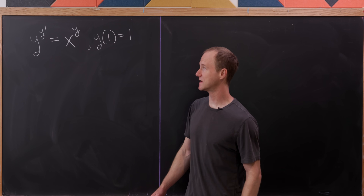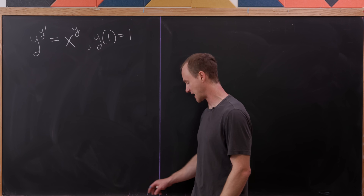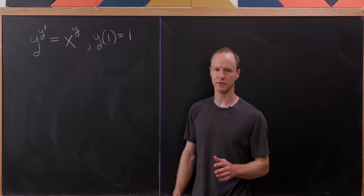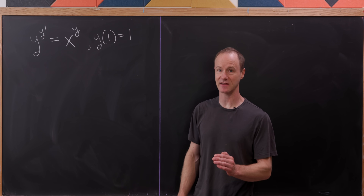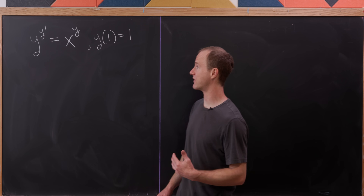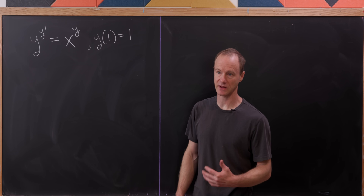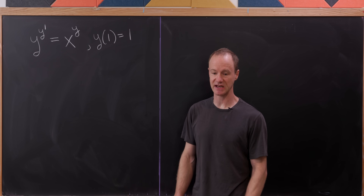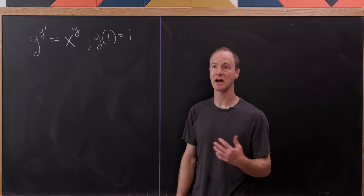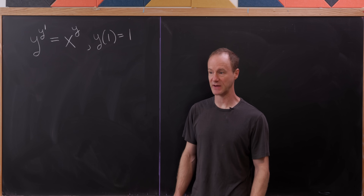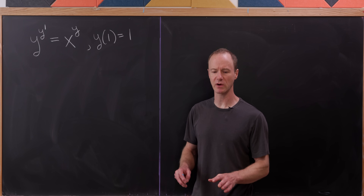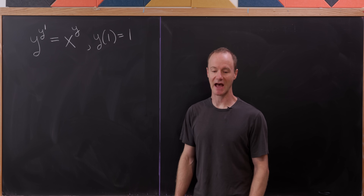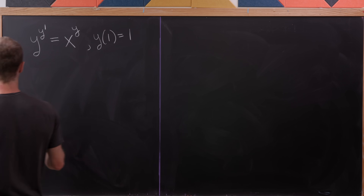We have y to the y prime equals x to the y. Anytime you've got variables in both the base and the exponent — and here y is the dependent variable depending on independent variable x — you generally want to take a logarithm of both sides just to bring those out of the exponent. So let's do that.